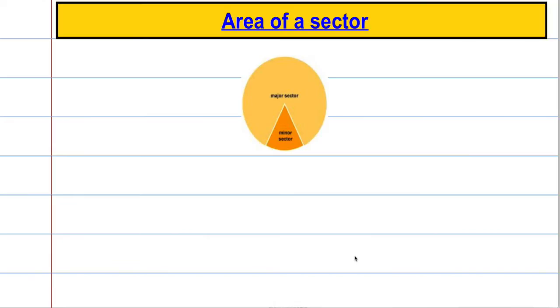We're going to look at the area of a sector. Here we have a circle and this part here, which looks a little bit like a pizza slice, is what we would call a minor sector — so it's the smaller sector — and then the larger part is what we call a major sector.